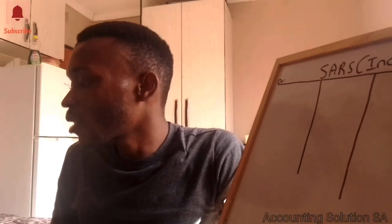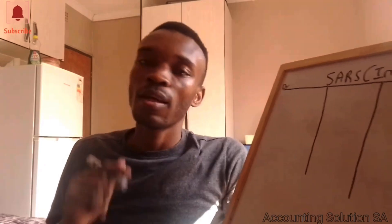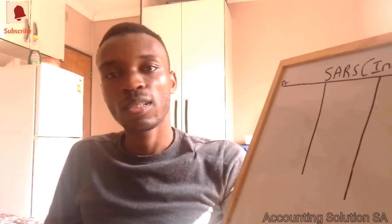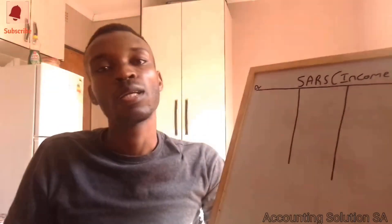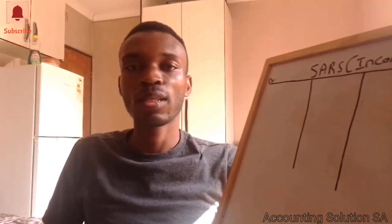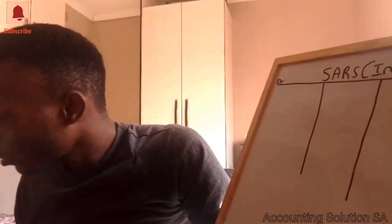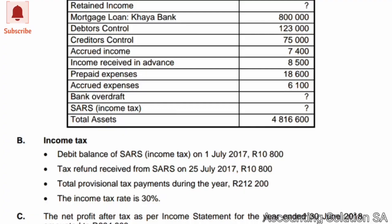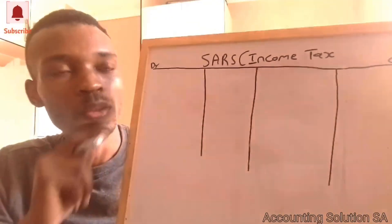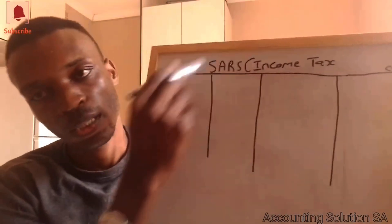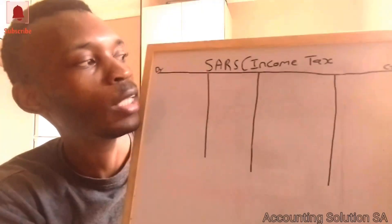The net profit after tax given is 604,800. The reason they give us the net profit after tax is because they didn't give us the income tax amount on the income statement, so we have to calculate it using the 30% rate. With this information we can calculate income tax payable or receivable. The easy method is to use a T-account format for SARS income tax.